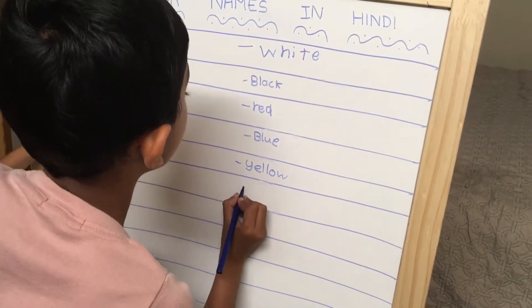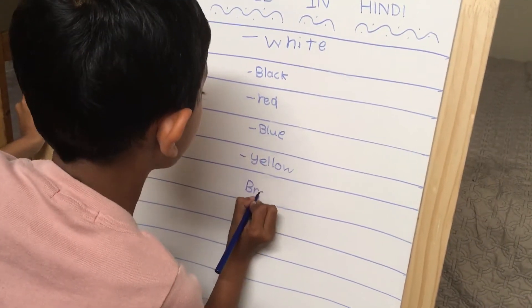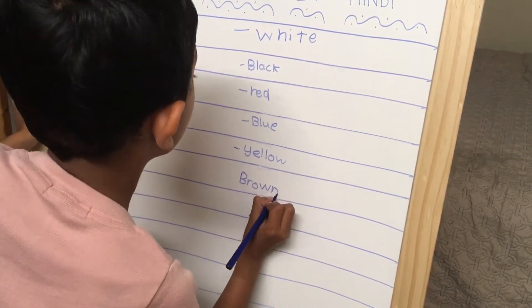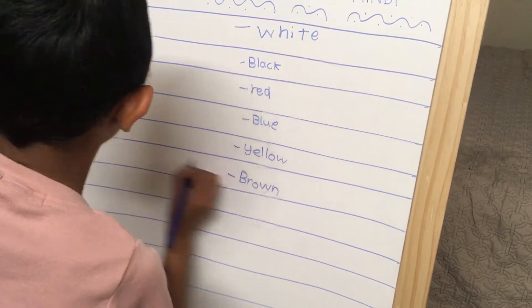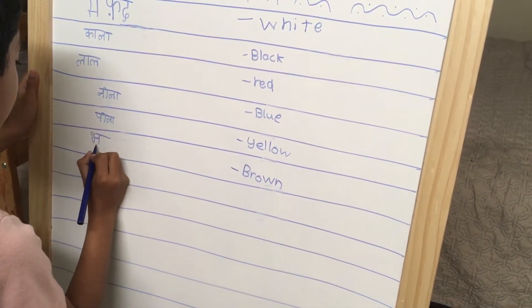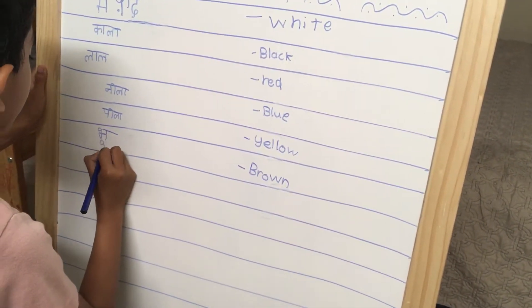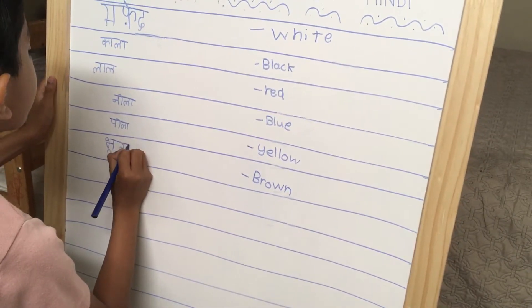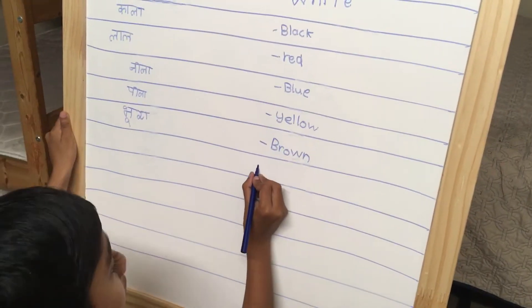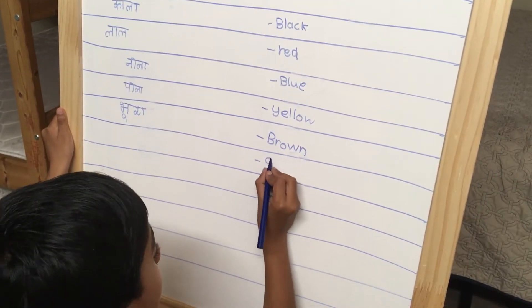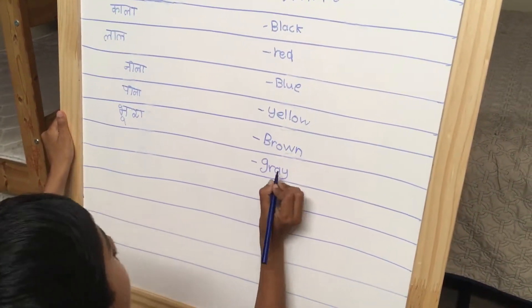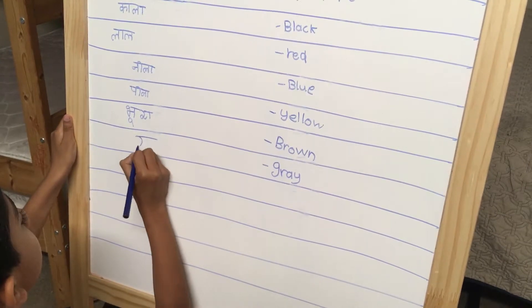Brown is called Boora. Gray is called Slatic.